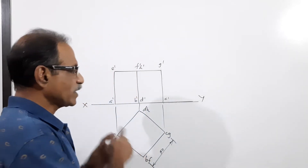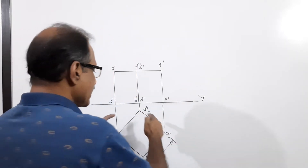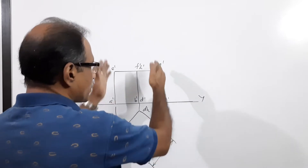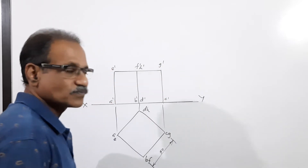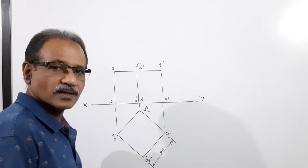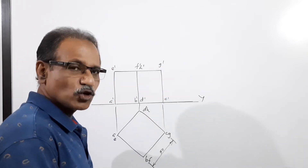I draw an XY line and keep the cube like this, and draw the plan and elevation. How is the cube positioned?